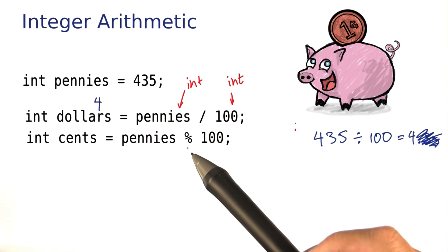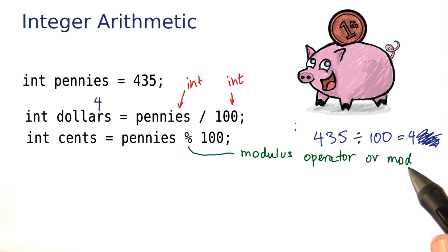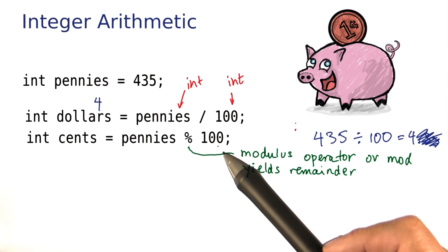For that, we have a different operator called the modulus operator, and we often just pronounce it as mod. It yields the remainder of the division by the operand on the right.